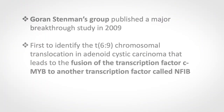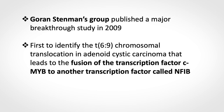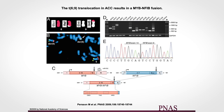This leads to the major discovery made by the group of Goran Stenman in Gothenburg, Sweden, in 2009. The Stenman group identified for the first time a chromosomal translocation leading to mutation of the C-MIB gene. In this translocation, the MIB gene located on chromosome 6 is fused to another gene called NFIB located on chromosome 9, forming a chimeric gene called MIB-NFIB.